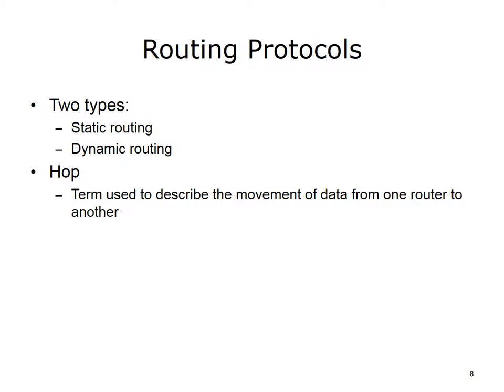Routers choose the best route for a packet to take to arrive at its destination. There are two ways a router determines the best path: static routing and dynamic routing. In static routing, a network administrator programs the router to use a specified path. In dynamic routing, routers automatically calculate the best path and accumulate this in a routing table, sharing route information with each other. A hop describes the movement of data from one router to another; for example, a packet traveling across three routers is said to have taken three hops.